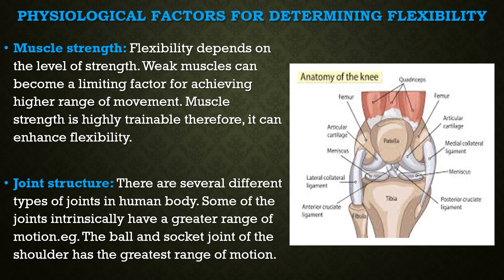Physiological factors for determining flexibility. First is muscle strength. The muscle should have a minimum level of strength to make movement possible, especially against gravity or external force. In sprint sports, the legs or knees cannot be lifted to the required height or angle if the related muscles are weak. Weak muscles can become a limiting factor for achieving a higher range of movement. Muscle strength is highly trainable and therefore can enhance flexibility.